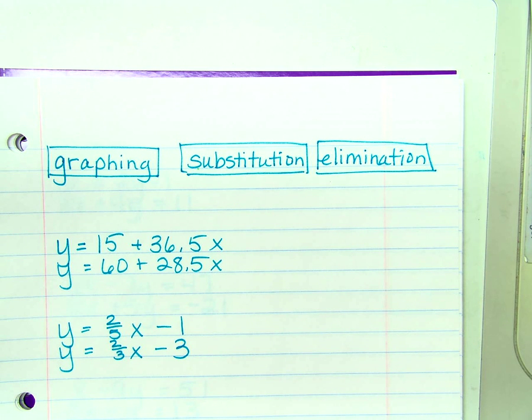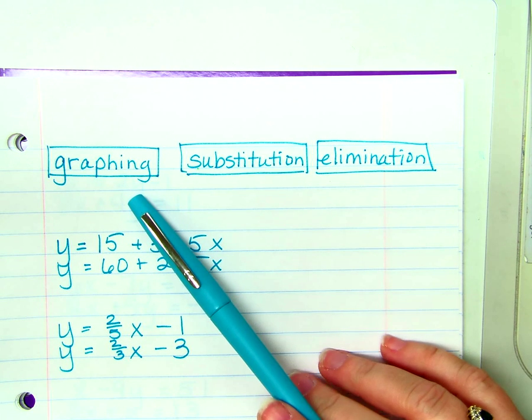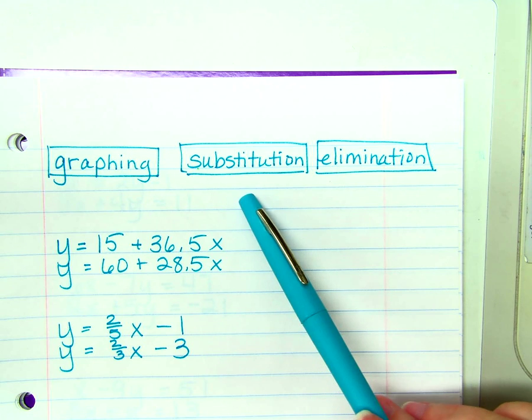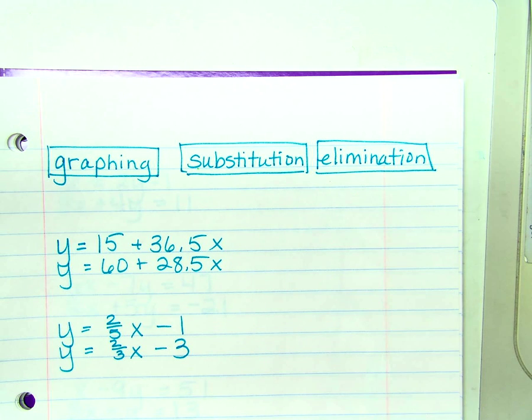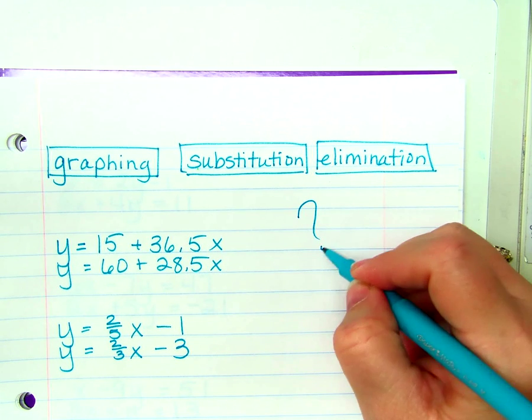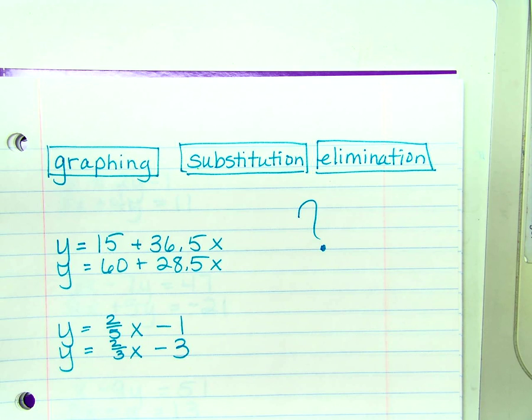Your flip video tonight is about choosing a method. We've talked about solving systems of equations by graphing, solving by substitution, and solving by elimination. But how do you know what to choose? How do you know which method to choose when you're given a system of equations?